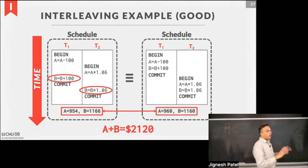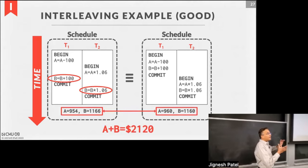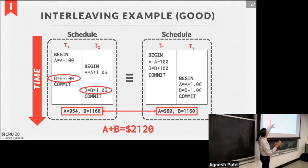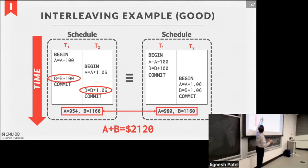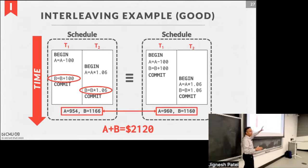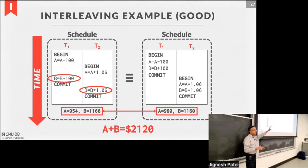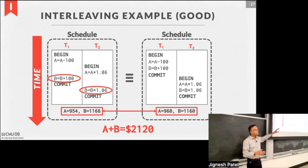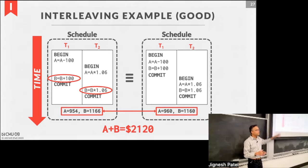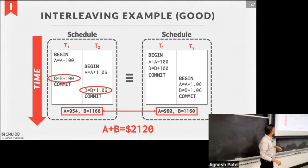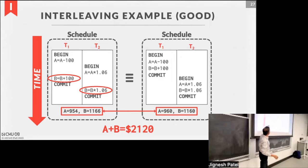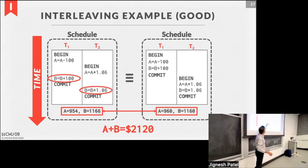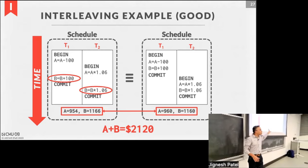Even though there was interleaving, that interleaving was safe and you ended up with one of the two legitimate ways to do this transaction because you had the right final value in the database. Even though this interleaving at first seems like it shouldn't work out — if this B happened before this read of B, then we would be off. The bottom value will still be the same because this is the same as having run T1 followed by T2, and that's the whole point. This schedule is okay.